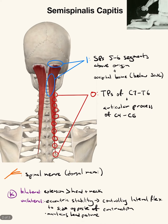Semi-spinalis capitis — 'capitis' means it goes into the head. It originates from the transverse processes of C7 to T6 and the articular processes of C4 to C6. You would just palpate the transverse processes since you can't really test the articular ones. It inserts about five to six segments above the origin, at the occipital bone below the superior nuchal line.